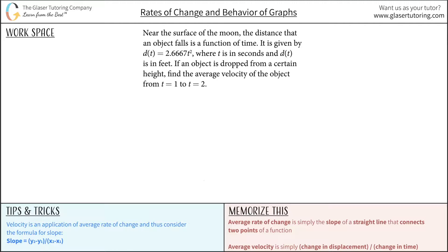Near the surface of the moon, the distance that an object falls is a function of time. It is given by d(t) = 2.6667t², where t is in seconds and d(t) is in feet. If an object is dropped from a certain height, find the average velocity of the object from t1 to t2.